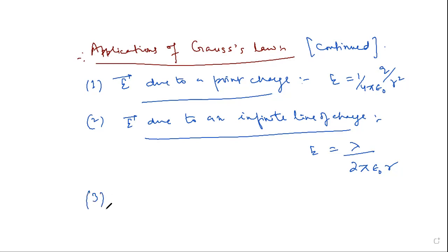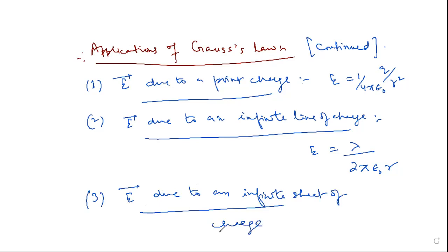Then we discussed electric field due to an infinite line of charge. The expression for that was E = λ by 2π epsilon-naught r. Then we discussed E due to an infinite sheet of charge. The expression was E = σ by 2 epsilon-naught.